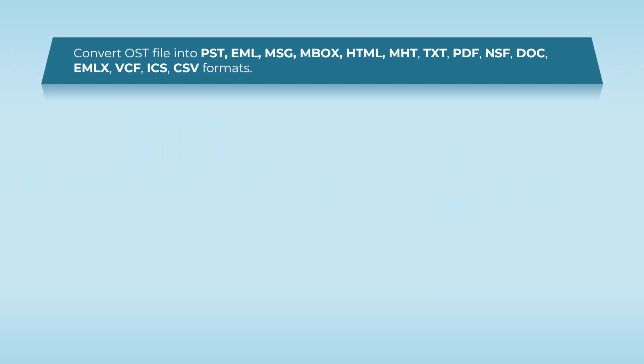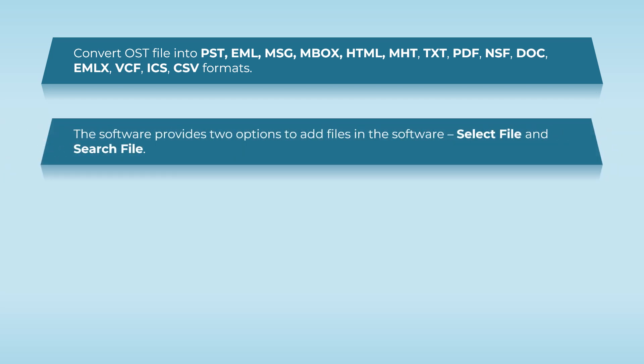Key features of the software: Convert OST files into PST, EML, MSG, MBOX, HTML, MHT, Text, PDF, DOC, RTF, VCF, ICS, and CSV formats. The software provides two options to add files in the software.